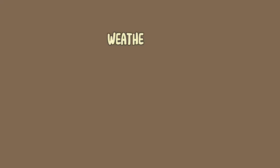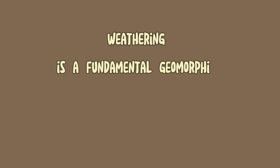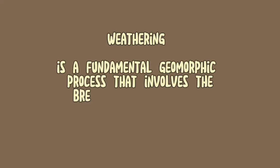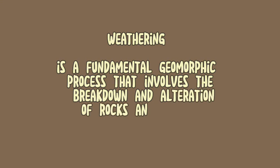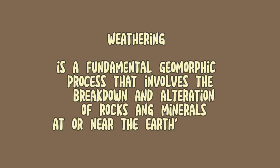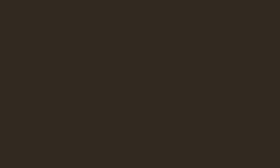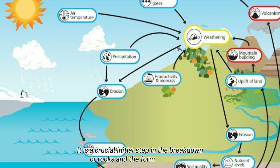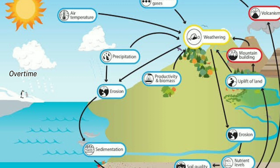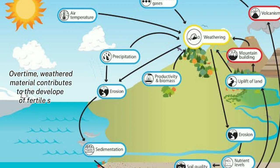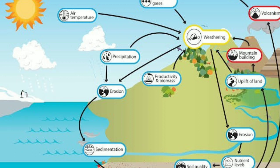Weathering is a fundamental geomorphic process that involves the breakdown and alteration of rocks and minerals at or near the Earth's surface. It plays a crucial role in shaping the landscape over long periods of time, and is a crucial initial step in the formation of soil. Over time, weathered material contributes to the development of fertile soil, which supports plant growth and various ecosystems.